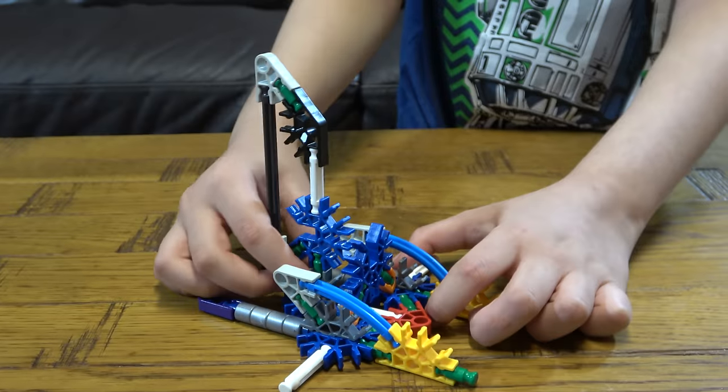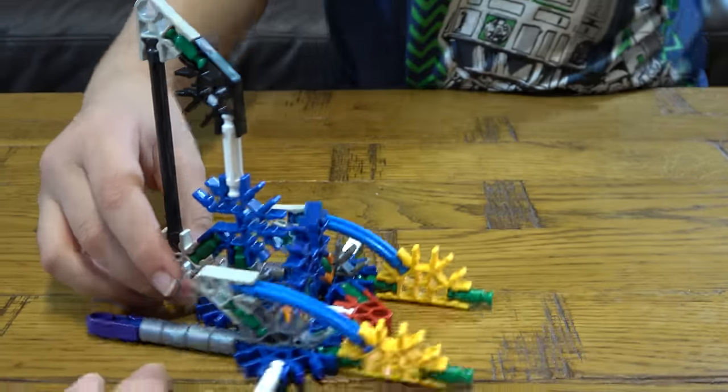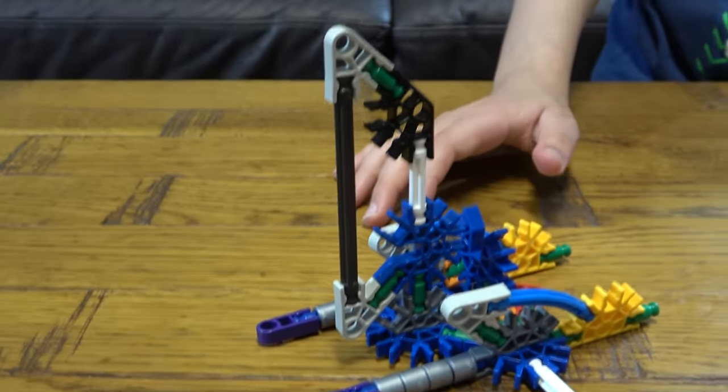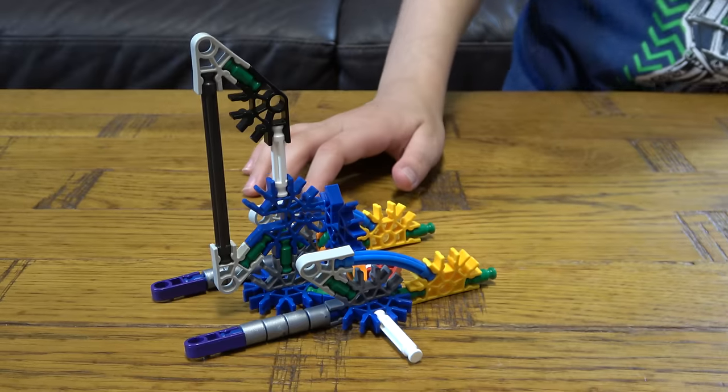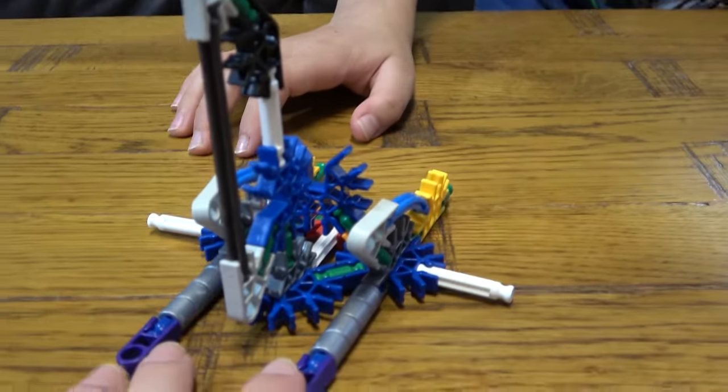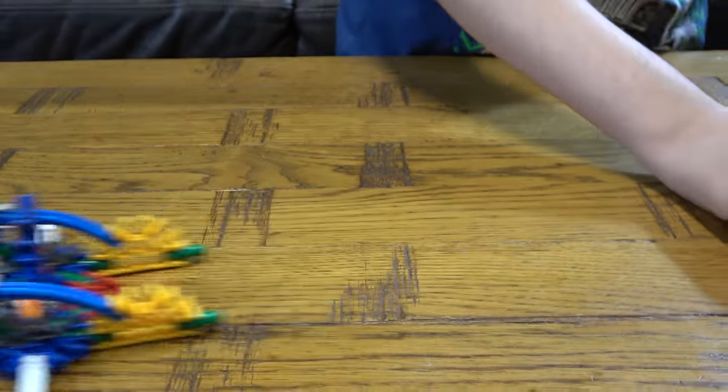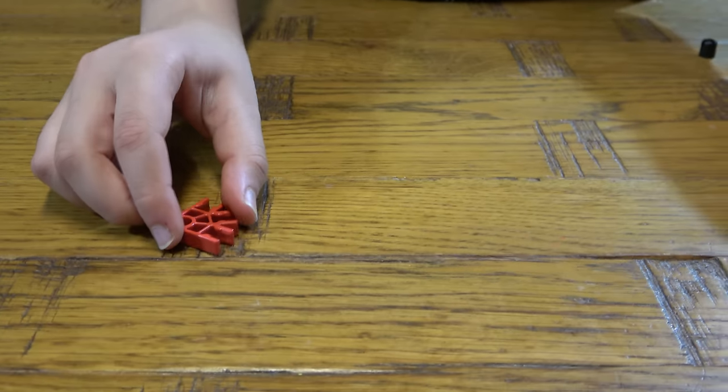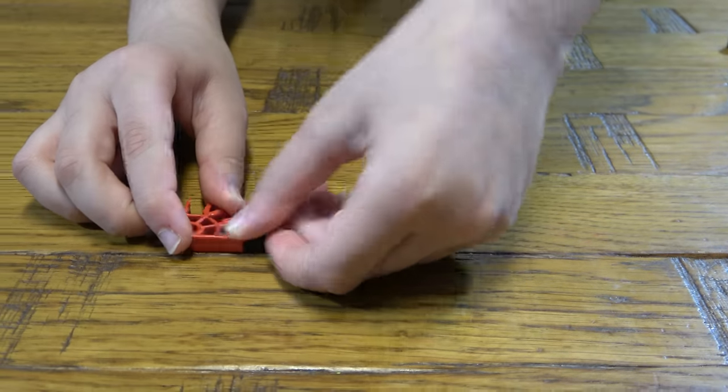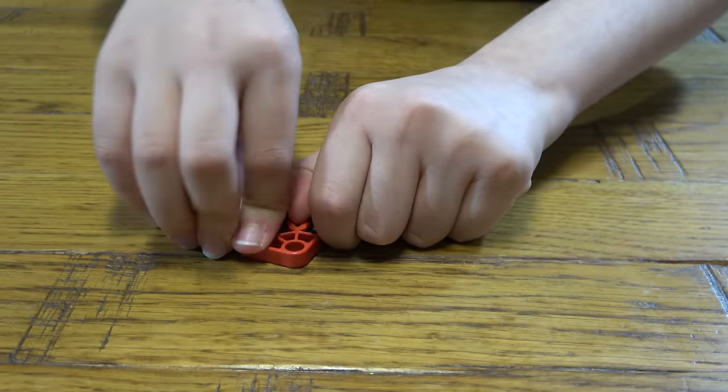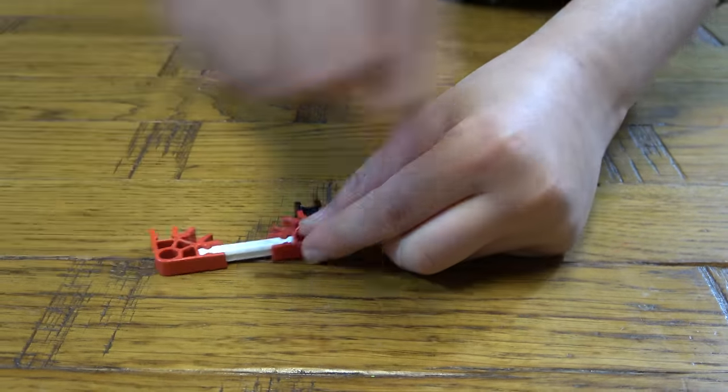Then we place this onto there like so. It looks like a fin or like the back tail of a shark or a fish. And then next we're going to place this here, that there, this here. It's really easy.